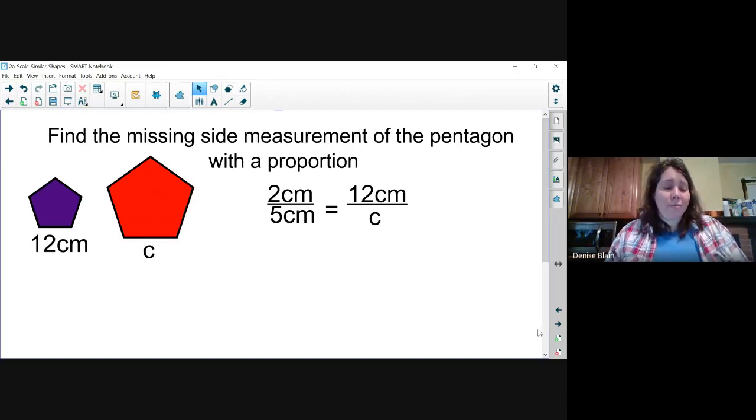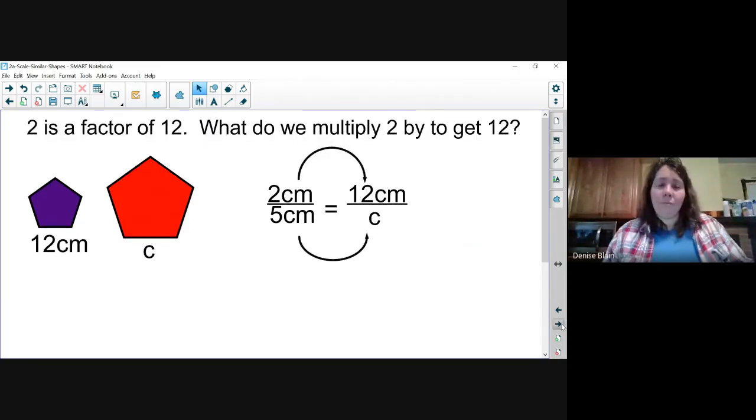With our ratio, since the first number on top is the smaller number, the smaller shape, the 12 for the small pentagon goes on top and the larger shape number goes on the bottom of our ratio. To solve the proportion, we look to see that 2 is a factor of 12.